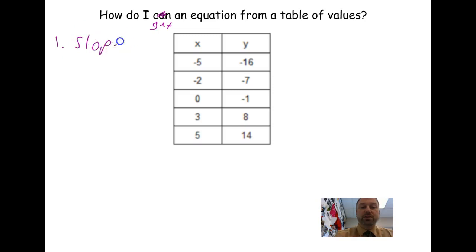The first thing you do is figure out the slope. All right, so we know slope is delta y over delta x, the change in y over change in x. So how do I get from negative 16 to negative 7? How do I get from negative 5 to negative 2? Well, because I have a table, I can just figure out what the pattern is.